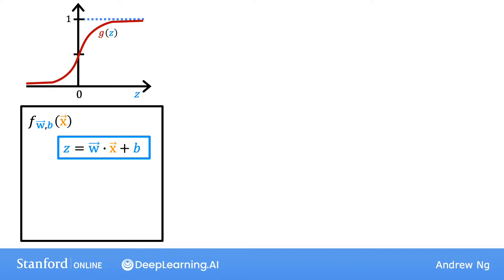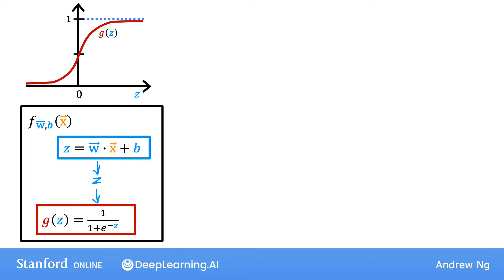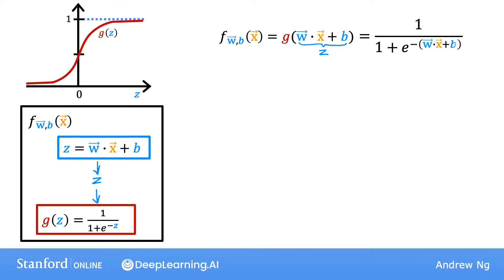In the first step, you compute z as w dot x plus b. Then you apply the sigmoid function g to this value z. Another way to write this is f of x equals g, the sigmoid function, also called the logistic function, applied to w dot x plus b. If you plug in the definition of the sigmoid function, f of x equals 1 over 1 plus e to the negative z, where z is w·x plus b.